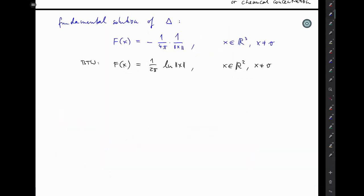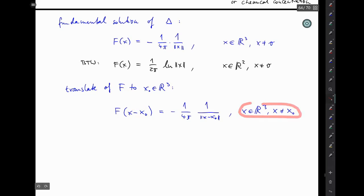So a translate of your fundamental solution is simply this. So you shift the singularity that used to sit at zero to a new point, let's call it x₀. So instead of f of x you evaluate f at x minus x₀, which of course gives you that expression. And you can plug in every vector from R³ but not x₀ because that's just this point of singularity.